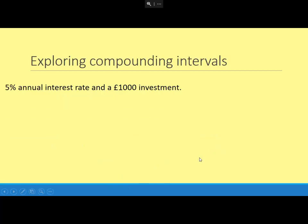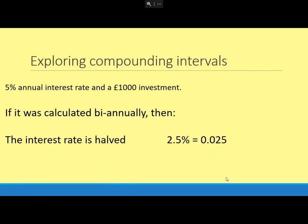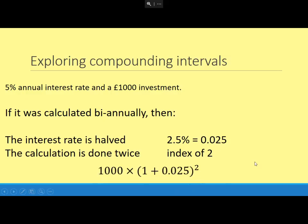What about though if it's bi-annually? Bi-annually can mean every two years or twice a year; we'll take it as twice a year. Then instead of paying that 5% twice a year, it's 5% divided by 2 to get 2.5%, which as a decimal is 0.025. That's the multiplier we're using, and it's being done twice, so we get an index of 2.